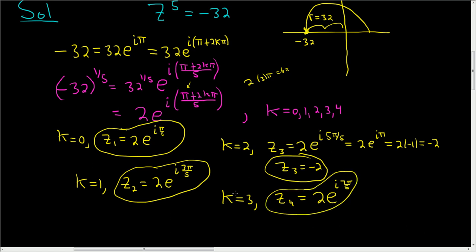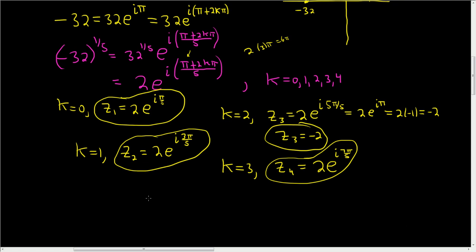Last, when k equals 4, we get z5 equals 2 e to the i. Plugging in 4: 4 times 2 is 8, plus 1 is 9. So we get 9 pi over 5.